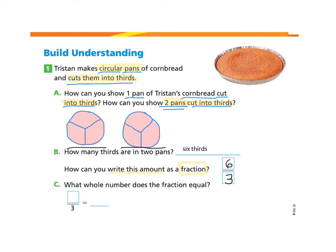Now let's look at Part C. What whole number does the fraction equal? When we have six thirds, which is our fraction, what whole number does it represent? We can see that the whole pan is filled here and the whole pan is filled here, so we really have two complete pans, which is our whole number.